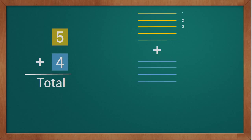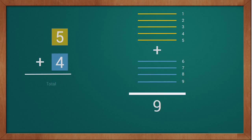1, 2, 3, 4, 5, 6, 7, 8, 9. This way we got a total of 9 sticks, so our answer is 9. 5 plus 4 equals 9. Our total is 9.